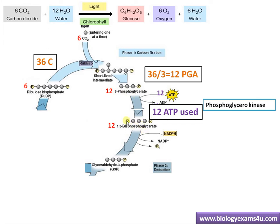In the next step, 3-phosphoglycerate is converted to 1,3-bisphosphoglycerate. Another phosphate group is added — since the original has a single phosphate group, another is added. For this addition of a phosphate group, ATP is required: 12 ATP is utilized, converted to ADP and Pi, and that phosphate is joined to phosphoglycerate forming 1,3-bisphosphoglycerate. The enzyme involved is kinase — whenever there is addition of a phosphate group, the enzyme involved is kinase. So 12 ATP is used in this step.